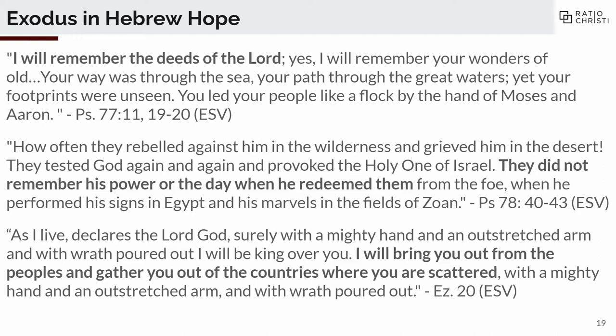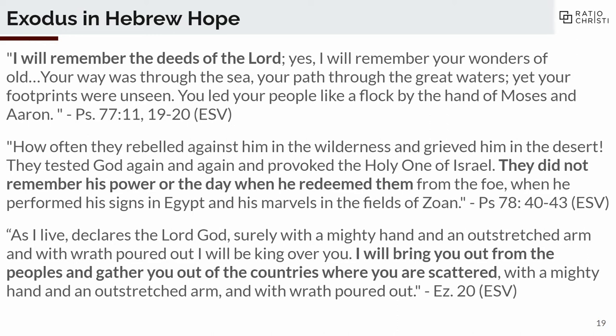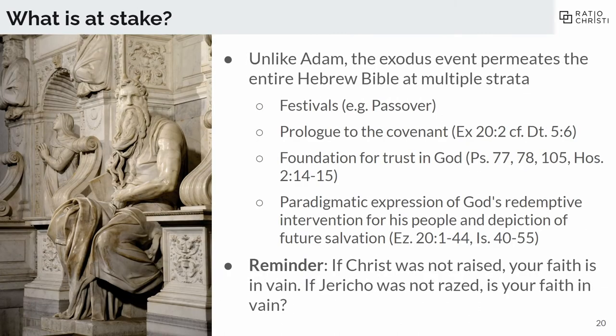This is an interesting passage because the entire book of Ezekiel shows God exorbitantly mad at Israel. Even in this passage, he says: yes, I will rescue you, but you're still going to have to suffer for the great evils you've done. So we've talked about three basic things: the Exodus in the Covenant, the Exodus in Hope, and the Exodus as narrative. Let's synthesize this and ask: what is really at stake with the historicity of the Exodus?